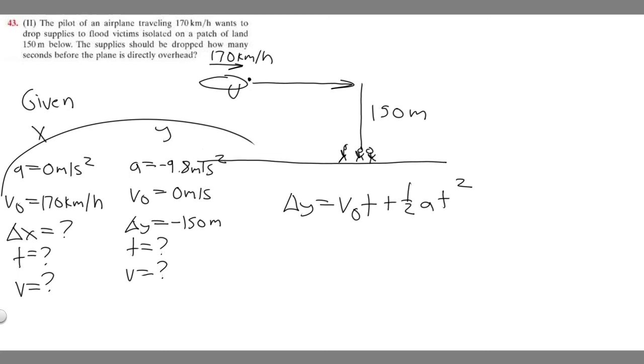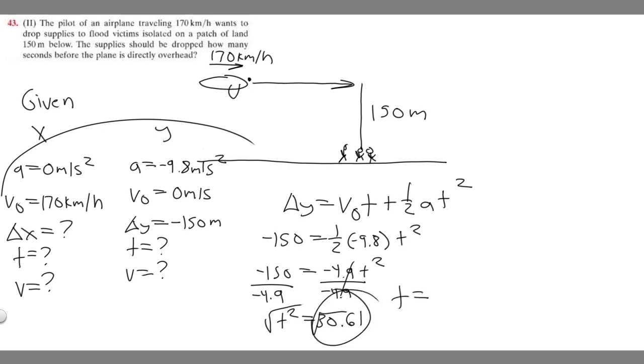Let's plug everything in. Minus 150 for delta y equals v₀ which is zero times t. Zero times t is zero, so I'll get rid of it. Then we have plus one half times a minus 9.8 times t squared. Minus 9.8 times one half is minus 4.9 times t squared. Divide both sides by minus 4.9 to get t squared. 150 divided by 4.9 gives us t squared equals about 30.61. Square root both sides, so t equals the square root of 30.61.